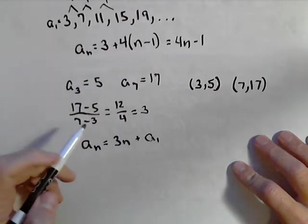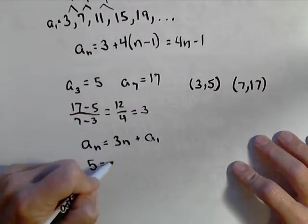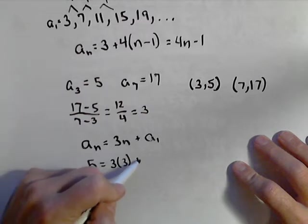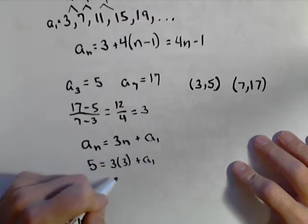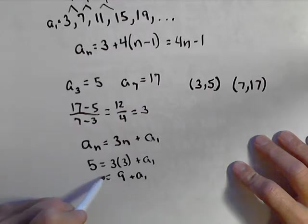We know when n is three, a sub n has to be five, so let's plug that in. So five equals three times three plus a sub one, or nine plus a sub one equals five. So our first term has to be negative four.